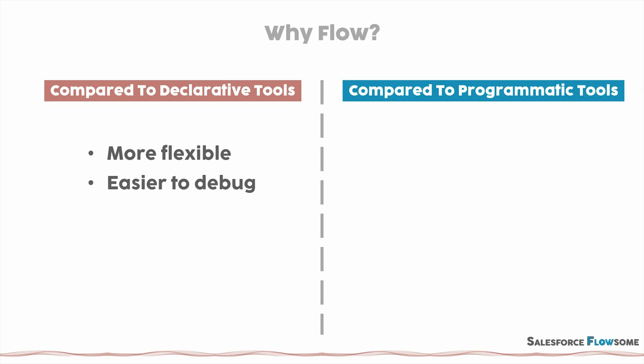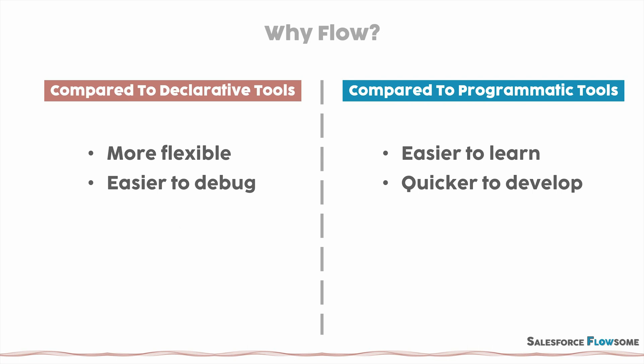We can also compare flow to the programmatic tool. The first benefit is it's easier to learn. If we exclude all the custom actions or components, the elements in flow are actually quite limited, meaning you don't have that many things to catch up in order to become a flow master. The second benefit is it's quicker to develop than Apex, because you can build and test your solutions right away — you don't have to write separate test classes. When I started with Apex, writing a test class is where I struggled the most.